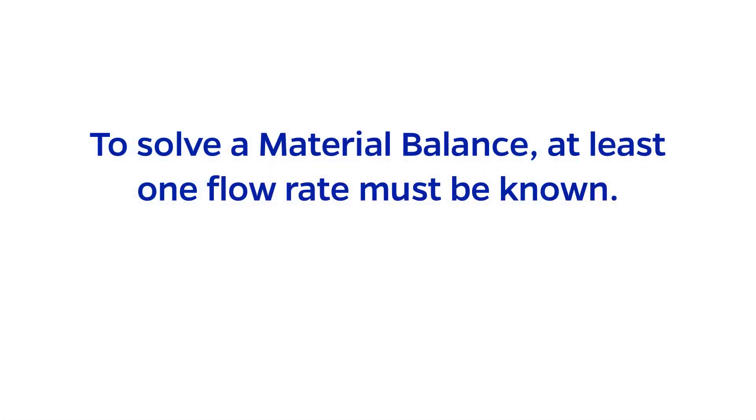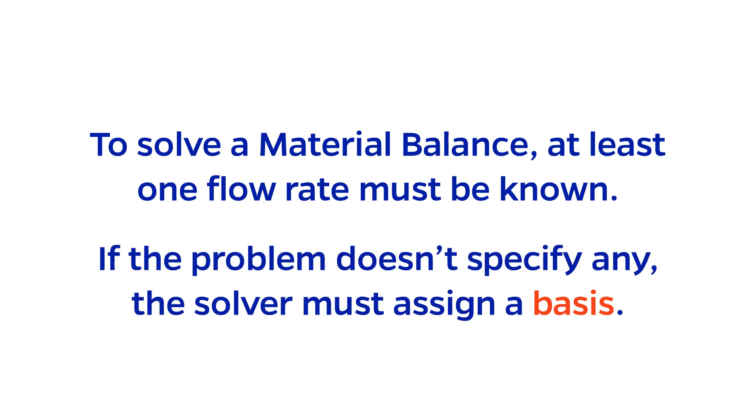A strange property of material balance problems is that the flow rate of at least one species or stream must be specified in order to initialize the size of the system and ultimately enable the solver to find the solution. If the problem makes no such specification, you as the solver have the freedom to assign a basis. This is an arbitrary flow rate that enables the problem to be solved.